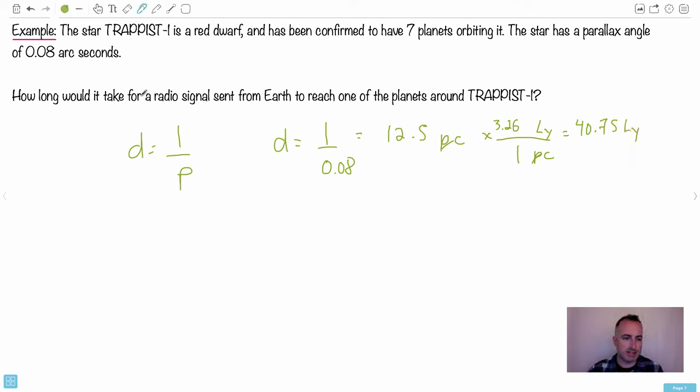Now this was a slightly different type of question but it's still related to this because how long would it take for a radio signal? Radio signal is light. And if this is a distance of 40 or 41 light years away, what it means is it'll take light 41 years to get there, which means that's actually our answer. It turns out the time then would be 41 years because if it's 41 light years away, radio signals are just light, it'll take light literally 41 years to get there.